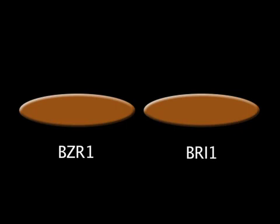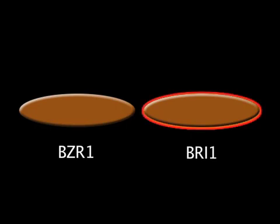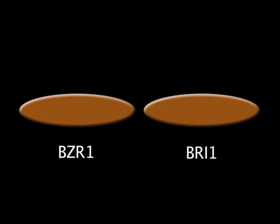BZR1 acts at the end of a chain reaction triggered by a steroid binding to the receptor called brassinosteroid insensitive 1, or BRI1, at the cell membrane. The researchers were very surprised by the large number of genes involved. Arabidopsis has about 32,000 genes in total, and this hormone appears to be masterminding a lot of different physiological responses.